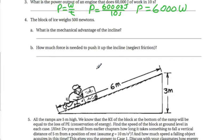So you're inputting 6 meters worth of work and the output is 3 meters. So the advantage is 2 or 2 to 1 as we say. So the mechanical advantage of the incline is 2 to 1.